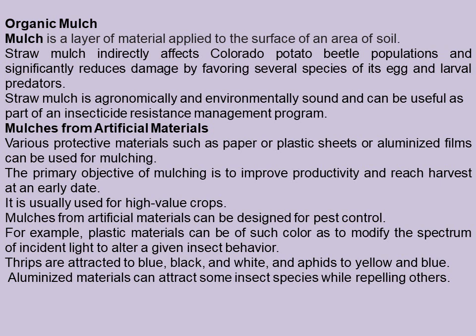Mulch from artificial materials can be designed specifically for pest control. For example, plastic materials can be of such colour as to modify the spectrum of incident light and alter insect behaviour. Thrips are attracted to blue, black, and white, while aphids are attracted to yellow and blue. Aluminized materials can attract some insect species while repelling others, making such materials useful in attracting and repelling insects selectively.